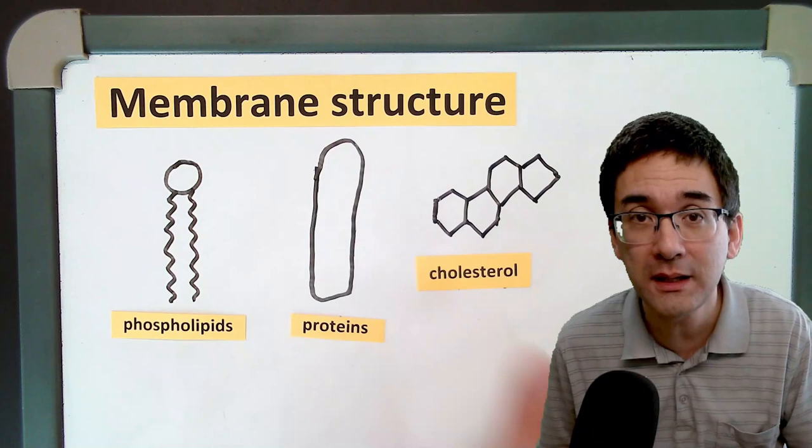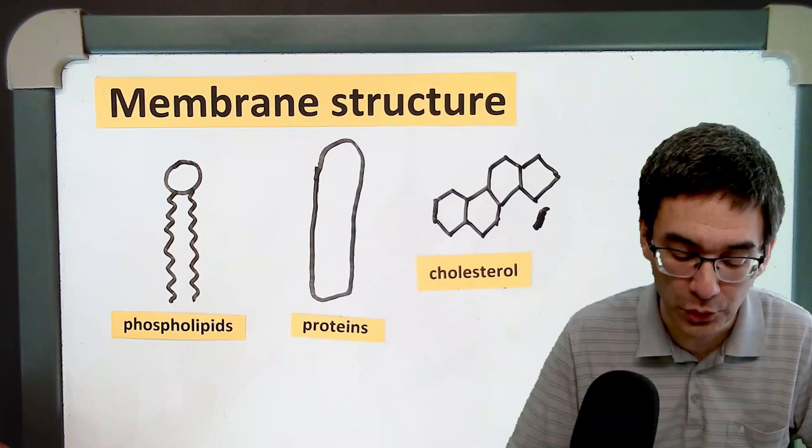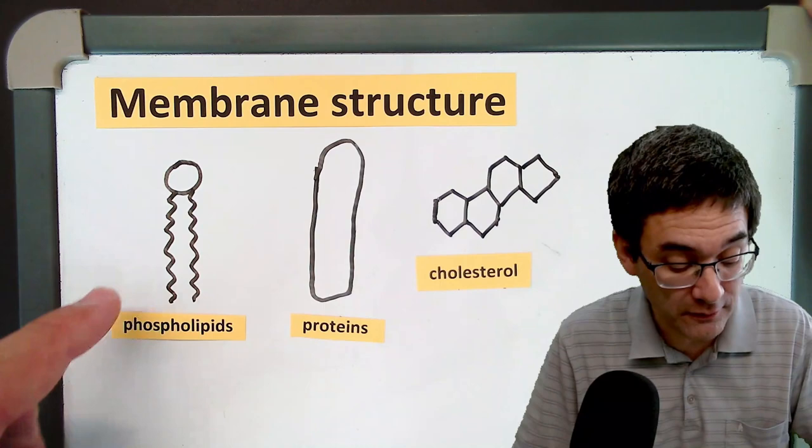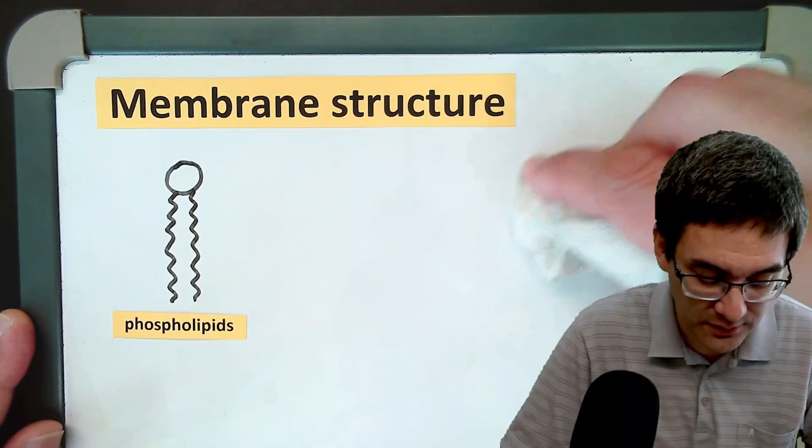When I make the drawing of a membrane later on, I'm just going to draw the cholesterol as a little line, simply because otherwise the proportions are not correct. Before I draw the membrane, let's have a closer look at a phospholipid and why it looks the way it does. I'm going to erase this and have a closer look at this phospholipid.